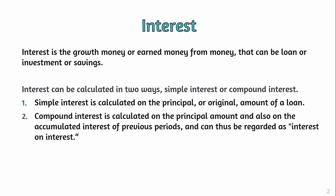Compound interest, on the other hand, is calculated on the principal amount and also on the accumulated interest of previous periods, and can thus be regarded as interest on interest. Compound interest depends on the principal plus the interest accrued over the period.